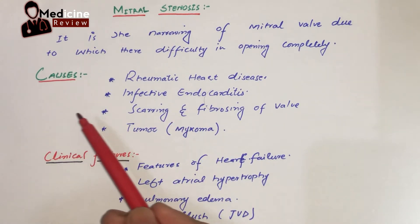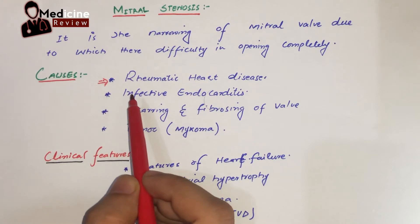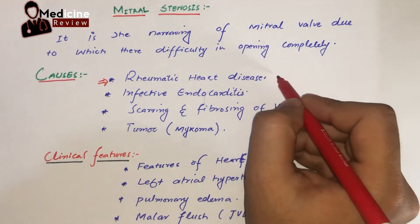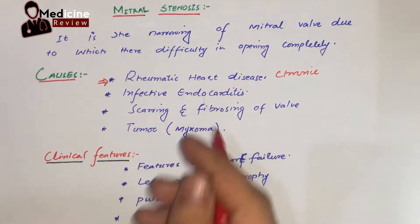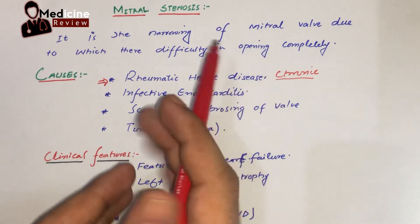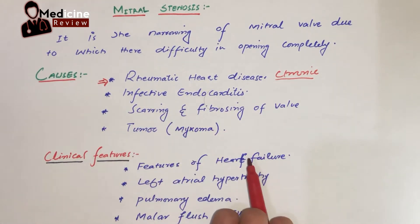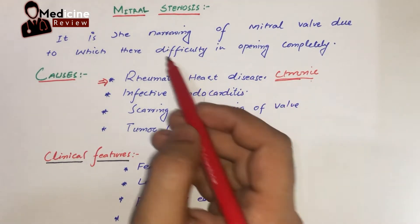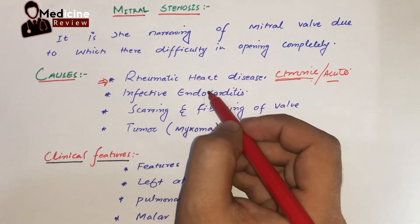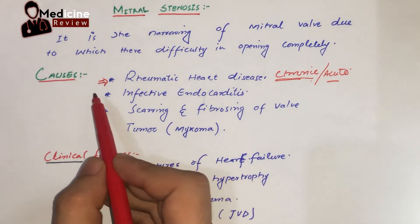Looking at the causes of mitral stenosis, the most common one is rheumatic heart disease — specifically chronic rheumatic heart disease. The mitral valve is most commonly affected in rheumatic heart disease. In chronic rheumatic heart disease, mitral stenosis is the most common manifestation, but in acute rheumatic heart disease, mitral regurgitation is most common. Keep in mind this differentiation.